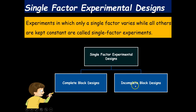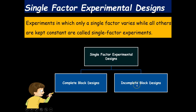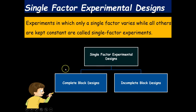In complete block design there is a complete set of treatments within a block, whereas in incomplete block design there is not a complete set of treatments within the block. Under complete block designs we have different types: CRD (Completely Randomized Design), RCBD (Randomized Complete Block Design), and Latin Square Design. Under incomplete block design we have Balanced Incomplete Block Design and Partially Balanced Incomplete Block Design. In the next video we will start with the basic CRD — Completely Randomized Design. Hope you have got an idea about the basic principles of experimental design. Thank you.